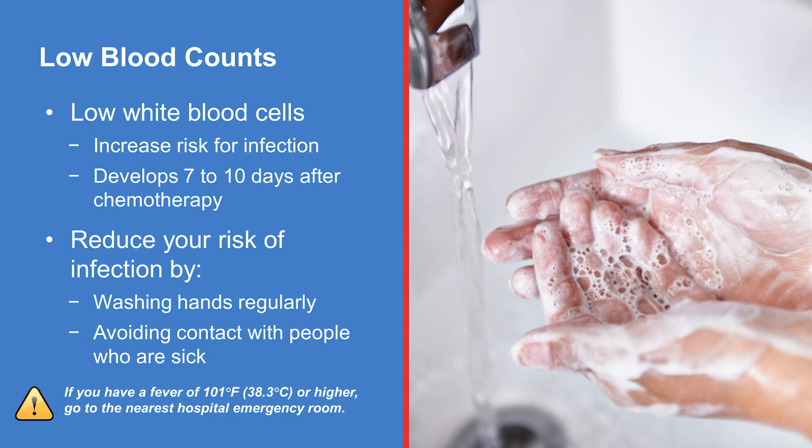Your white blood cells, which help the body fight off infection, will fall after you receive chemotherapy. You can reduce the risk of infection by practicing healthy hygiene habits such as washing your hands regularly and avoiding contact with people who are sick. Keep an oral thermometer with you. If you develop a fever of 101 degrees Fahrenheit or higher, this may be a sign of infection — immediately go to the nearest hospital emergency center.